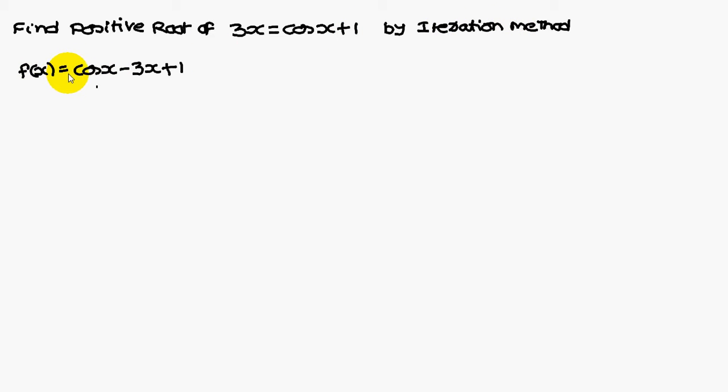Given that f of x is equal to cos x minus 3x plus 1. This 3x I am moving to the right hand side. Therefore, f of x equals cos x minus 3x plus 1.